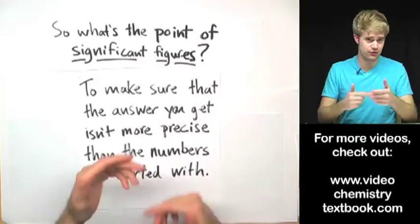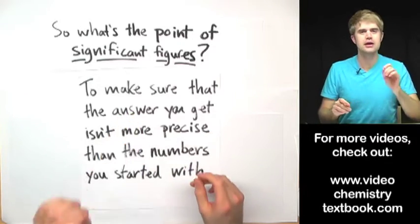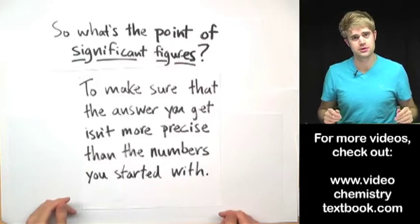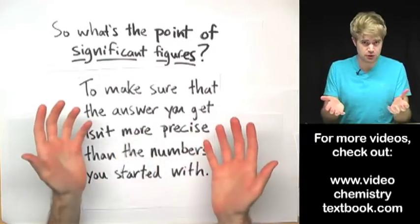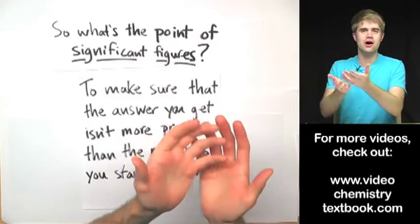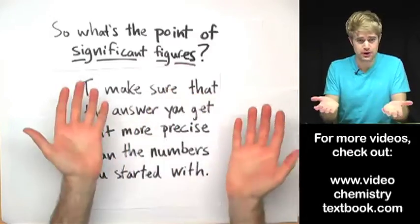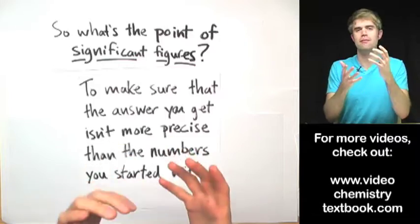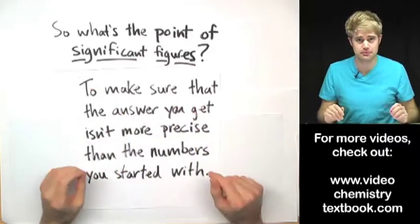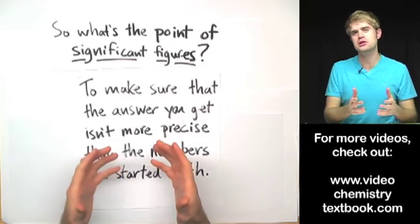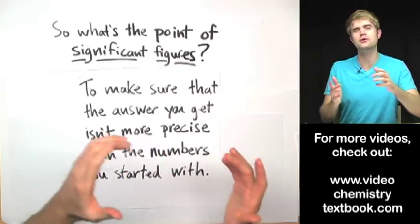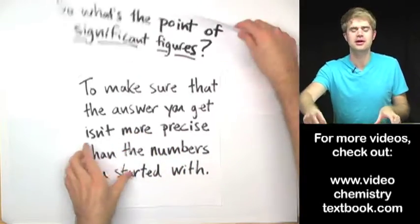Most of the math that we do in science is with numbers that are measurements, right? So it's like the amount of liquid in a beaker, that's a measurement, or the mass of a bunch of chemicals, also a measurement, or maybe the amount of pressure in a gas sample. All these are measurements. Now when we're taking measurements, some measurements can be really precise and others can be not so precise. Let me show you what I mean.